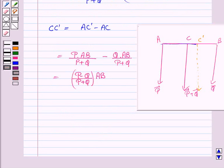Hence we have proved that the resultant is displaced through a distance P minus Q upon P plus Q into AB.